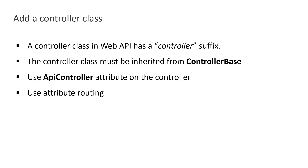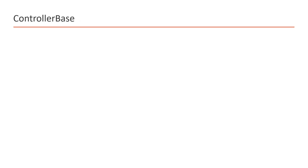The ControllerBase class provides many methods and properties to deal with HTTP requests. For example, when we add a new resource using a web API, we need to return the 201 status code, and for that we need a specific method. Similarly, if we want to return the 200 status code, we need another method — and the ControllerBase class has all those methods.